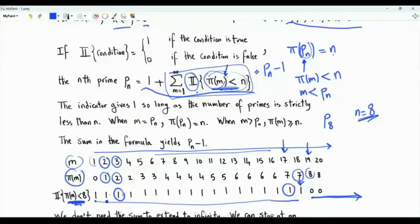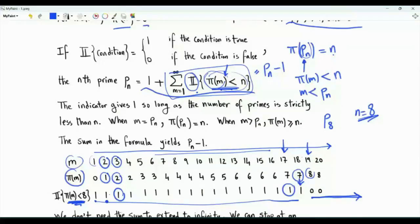The indicator gave us a number of 1s corresponding to the number of positive integers between 1 and the prime number of interest minus 1. When we do this summation, in this example we get 18. Then we add 1 and get the eighth prime.